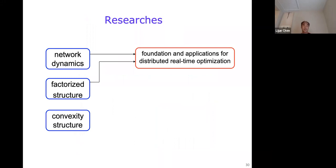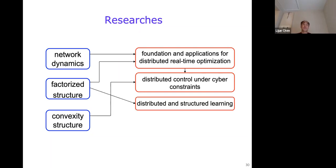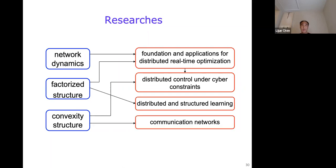My research has leveraged network dynamics and factorized structure to develop a theoretical foundation for distributed real-time feedback optimization and its application to power systems. By further leveraging convexity structure, we have also investigated how to take into consideration cyber constraints such as limited communication and sensing in distributed control. By leveraging factorized structure, we have developed distributed and structured learning for Q-learning and reinforcement learning in network dynamical systems. By leveraging convexity structure, we have also developed scalable and efficient algorithms for some important problems in communication networks. Any questions so far?